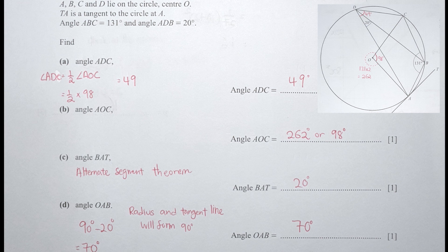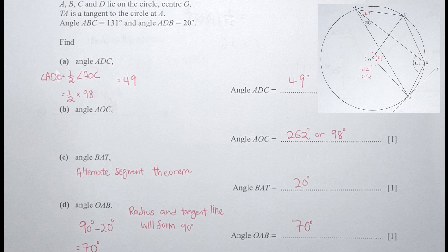For part b they are looking for angle AOC. This is a recurring issue: Cambridge didn't specify whether they mean the major or minor sector angle, so it's ambiguous whether the answer is 262 or 98. I want to address to Cambridge: please phrase your questions carefully, as this type of vague question has appeared multiple times in past papers and creates confusion for students.